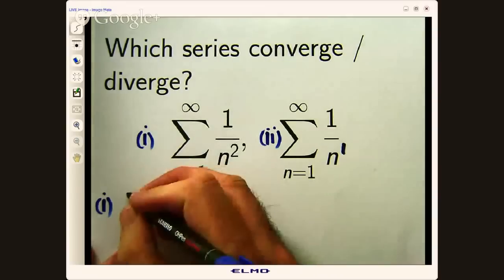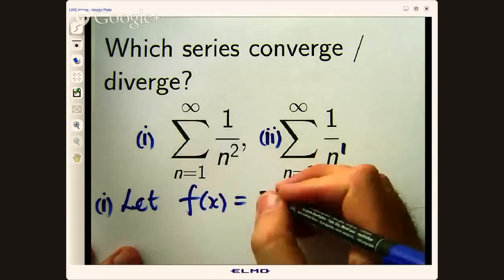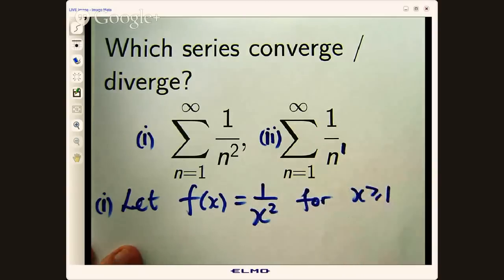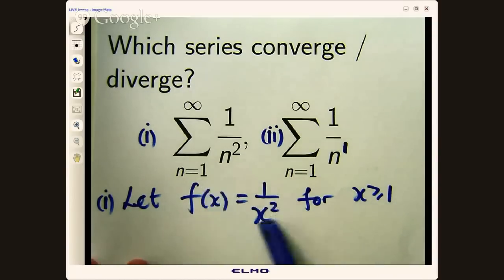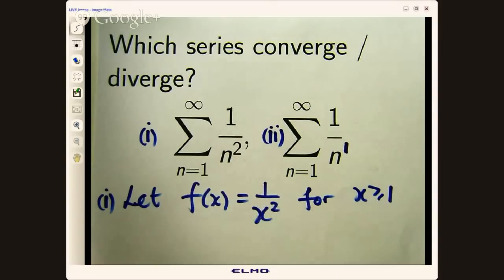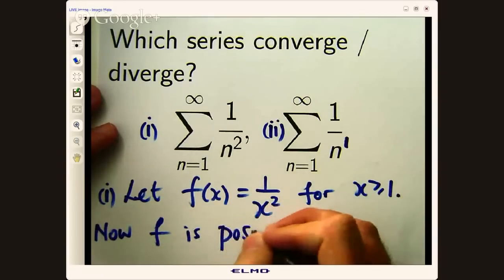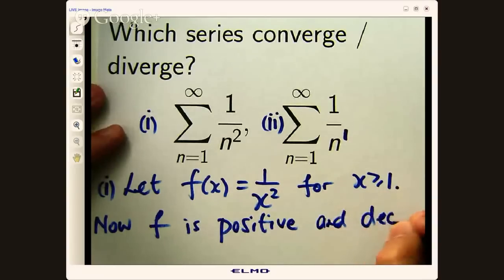For part one, what I'm going to do is I'm going to let f(x) be a function associated with the sum. So I've introduced this function of x, 1/x², where x is real and greater than or equal to one. This function is positive for x greater than or equal to one, and it's decreasing. These are the two conditions of this integral test.